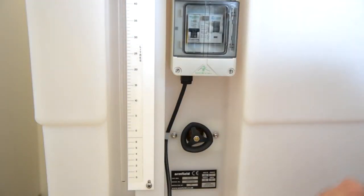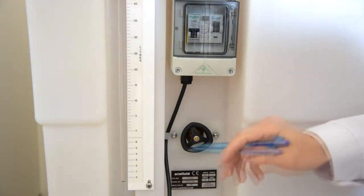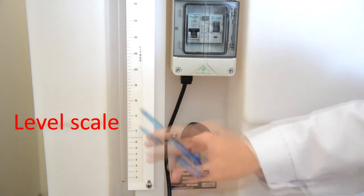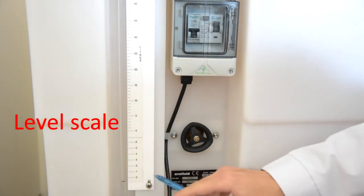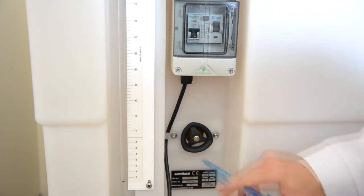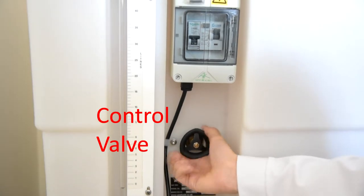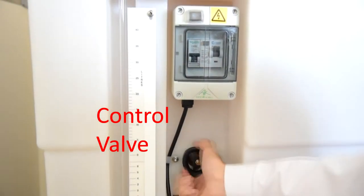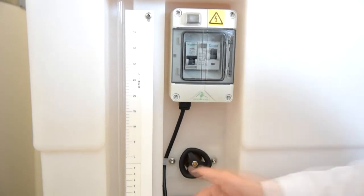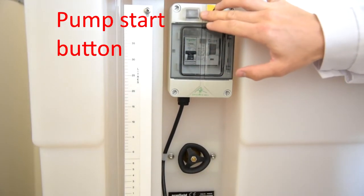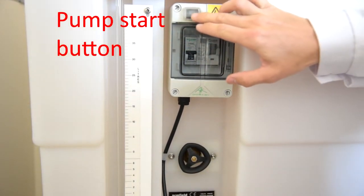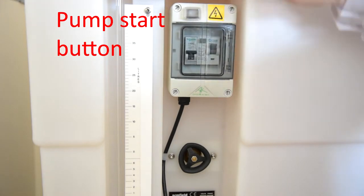In this part we see the level scale, which is used to measure flow rate. This is the control valve, where we can control flow rate. And this part contains the button to start this equipment.